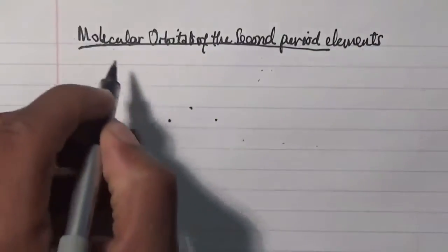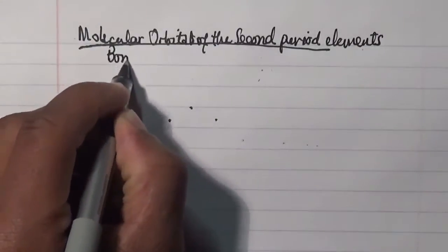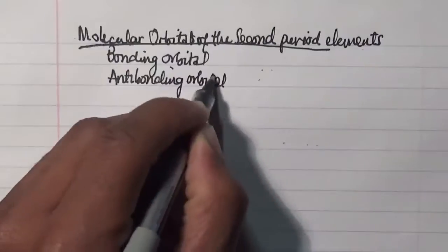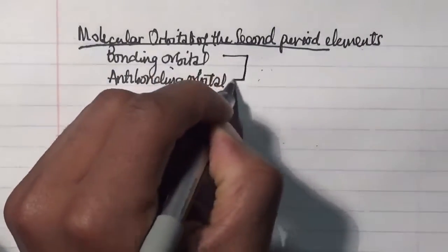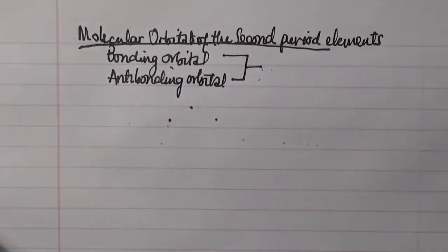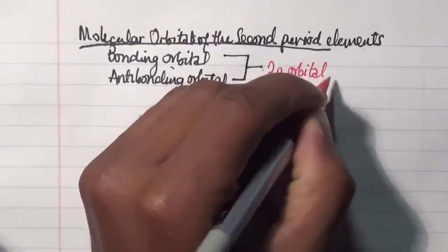Hello everyone and welcome to my channel. Today I'm going to focus on the molecular orbitals of the second period elements, looking at the bonding orbitals and antibonding orbitals formed from the 2p atomic orbitals.